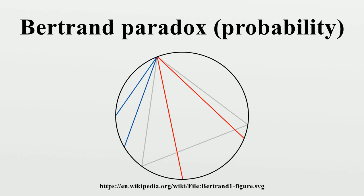However, Jaynes did not simply use invariances to accept or reject given methods, as this would leave open the possibility of another undescribed method meeting his criteria. Instead, Jaynes used integral equations describing the invariances to directly determine the probability distribution. In this problem, those integral equations have a unique solution — precisely what was called Method 2, the random radius method.